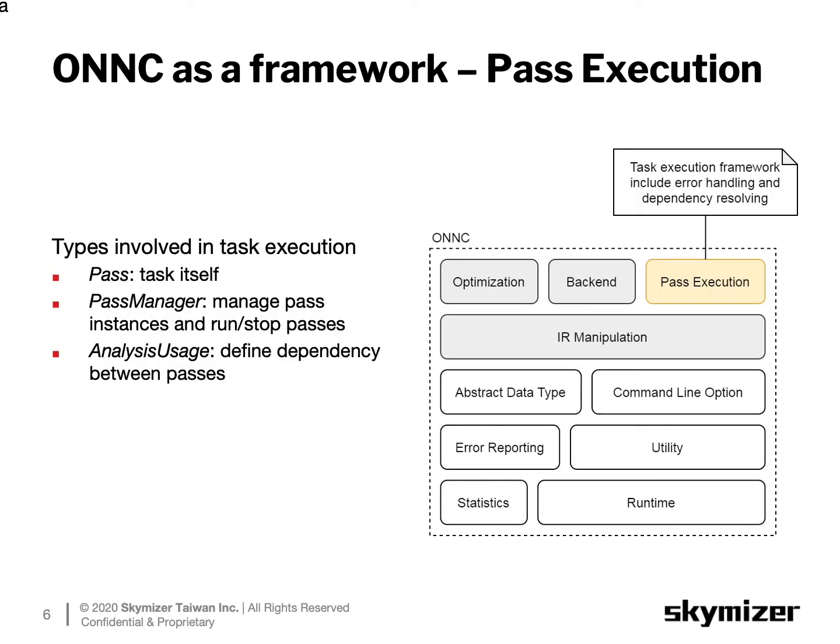The core concept of the ONNC framework is pass scheduling and execution. Compiler developers decompose different IR graph processing logics and implement them as individual pass types, create pass instances and add them into the pass manager. The pass manager will iterate through each pass in a predefined order and may stop or retry running a pass according to the return value from the pass instance. The ONNC framework follows the analysis-usage-object design in the LLVM framework to handle pass dependency, allowing users to define dependencies between pass types.